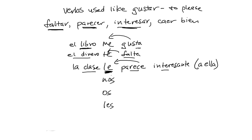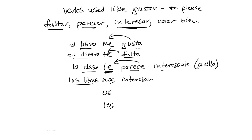Interesar is another verb that can be used that way. For example, 'the books are interesting to us' — we're interested in the books. You would say los libros, and then conjugate interesar to third person plural: interesan. Los libros nos interesan — the books are of interest to us, or interest us. In other words, we're interested in them.